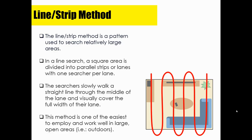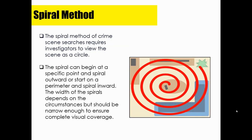The line or strip method is great in relatively large or open outdoor areas and is easy to employ. The spiral method requires investigators to view the scene as a circle — the spiral search can begin at a specific point and spiral outward, or start on a perimeter and spiral inward. The width of the spirals depends on the circumstances but should be narrow enough to ensure complete visual coverage. The goal in all four search patterns is to find evidence, and a designated search pattern helps investigators stay laser focused on what they're looking for.